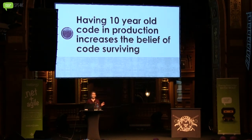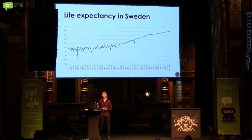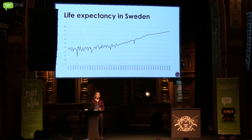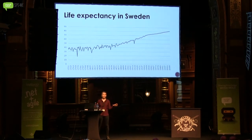Now I'd like to talk about something completely different for a couple of minutes: the life expectancy of human beings in Sweden. Life expectancy in Sweden has steadily increased for the past 200 years. There are four low points — 1773, a famine due to failed crops; 1809, a Dano-Swedish war; 1857, a financial panic; and World War I. But apart from these four points in time, life expectancy in Sweden has increased for 200 years, and these statistics are roughly the same for most of Europe.